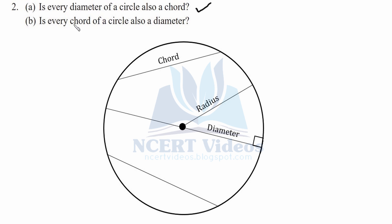Is every chord of a circle also a diameter? No. You can see here this is a chord and it is not a diameter. The diameter will always pass through the center point O of the circle. So this is false.